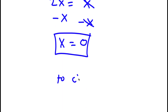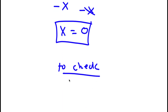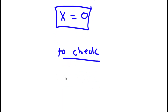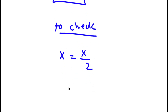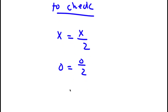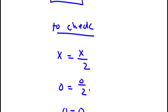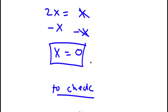Now to check: I have x is equal to x over 2, and we know x equals 0. So I have 0 is equal to 0 over 2. 0 divided by 2 is 0, so I have 0 equal to 0. Because this is true, my solution is correct.